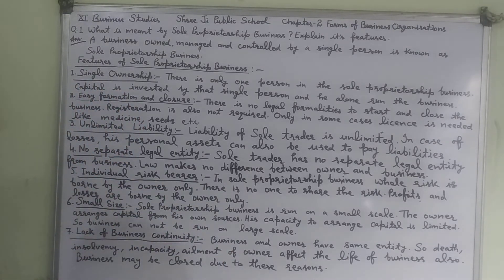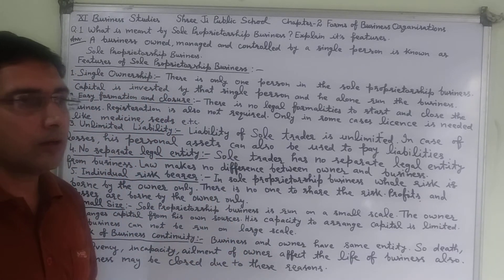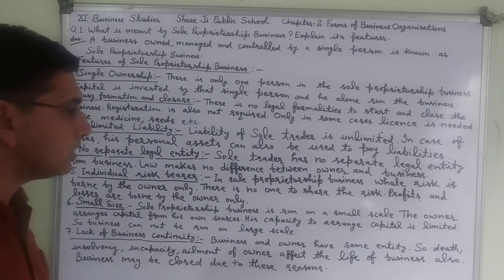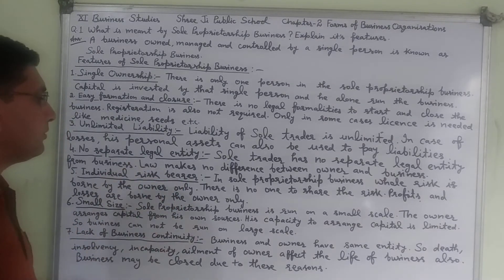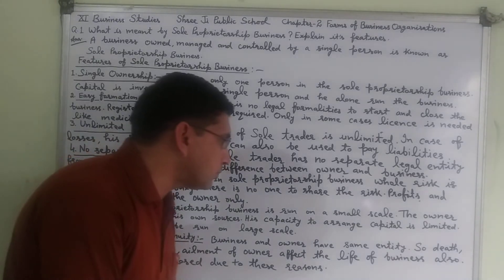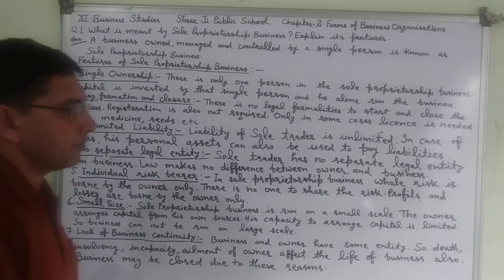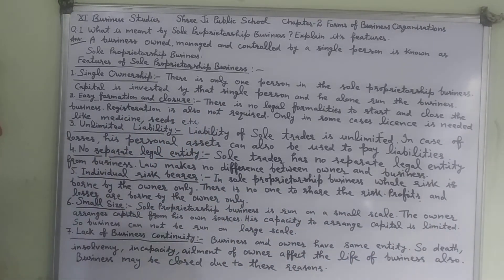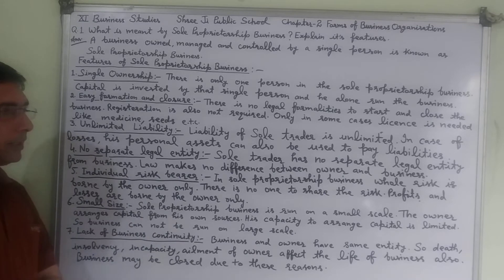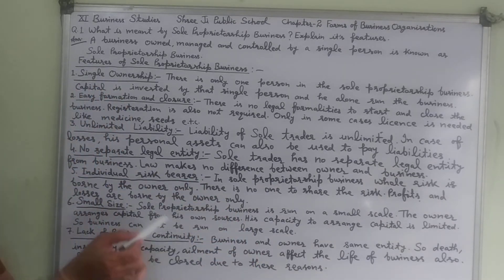The next feature is individual risk bearer. All risk is borne by the owner only. There is no one to share the risk. All profits are enjoyed by the owner only, and all losses are to be suffered by the owner only. There is no one to share the risk — all risks are borne or suffered by the owner alone.